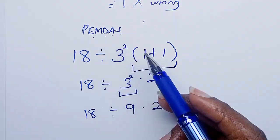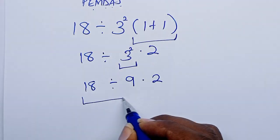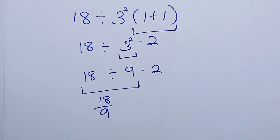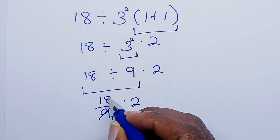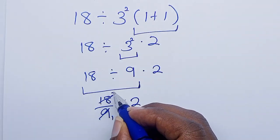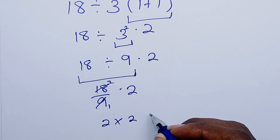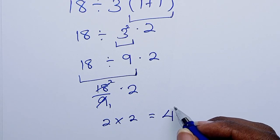Sorry, division comes first because the sign that is appearing first from the left. So you work out the division first. You say 18 divide by 9, then times 2. So 9 goes into 18 two times. So we shall have 2 times 2 which equals 4. So our answer is 4.